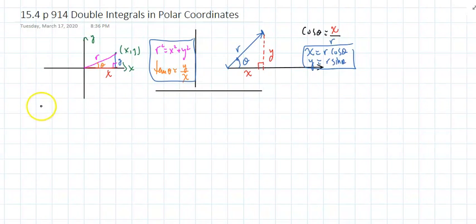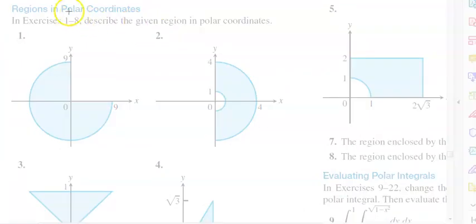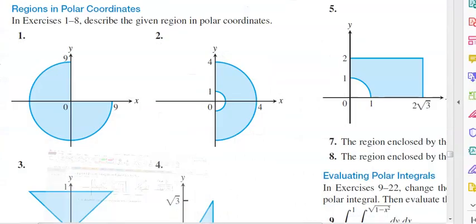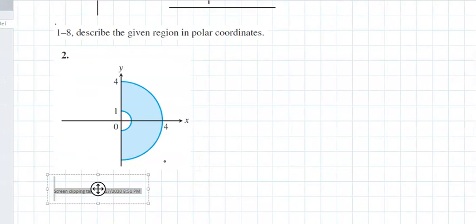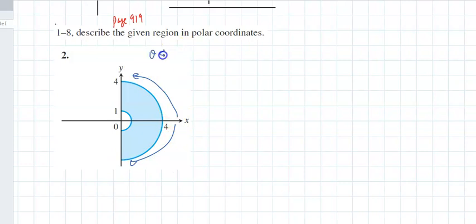Looking at problem number two on page 919, they say describe the given region in polar coordinates. Given an equation, give me the graph; given the graph, give me an equation. We notice here that theta runs between negative pi over two and pi over three - you must list theta in ascending order. And I notice that r is bounded between 1 and 4.